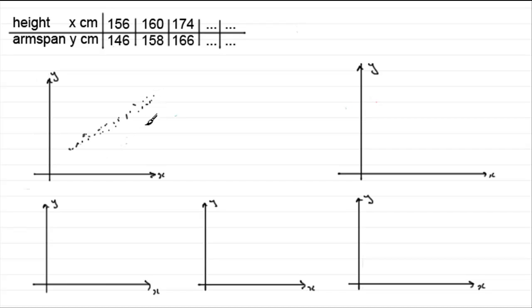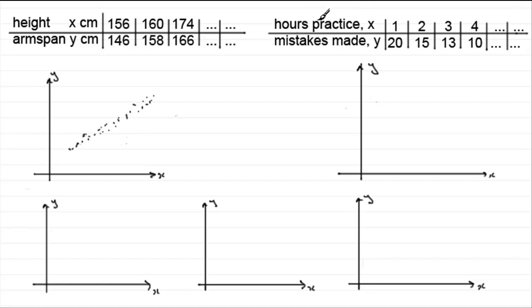We'll come back to this one in a moment. Let's take another scatter diagram. Suppose we were looking at, say, the hours of practice that someone does on a musical instrument, and we record it for several students. And notice that a student doing one hour of practice makes 20 mistakes, another student who does two hours of practice makes 15 mistakes, and so on.